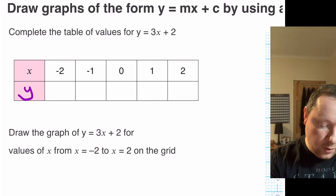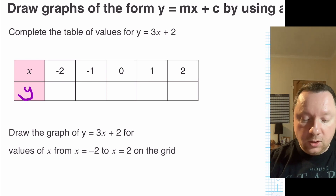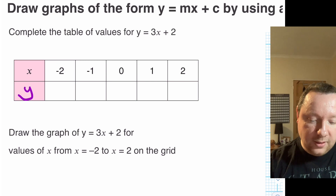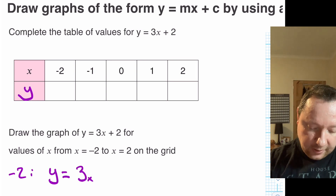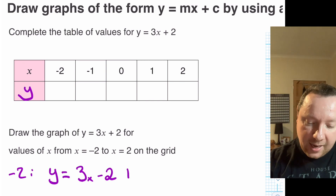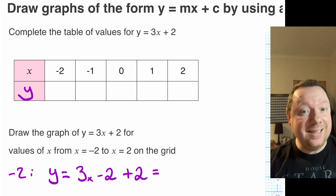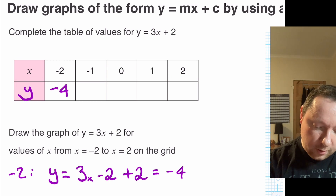I'm going to call the bottom row y, so it's always x then y. To get the bottom numbers we substitute our top numbers into the equation and find out what the answer is. I'll do this step by step. Let's start with minus 2: we've got y = 3x, so it's 3 times minus 2 because x is minus 2, and then add 2. So 3 times minus 2 is minus 6, add 2 is minus 4 — so I write minus 4 underneath the minus 2.